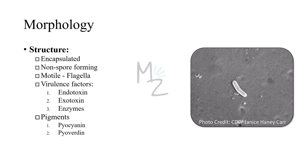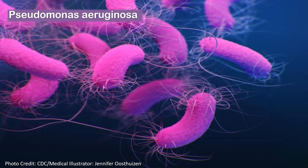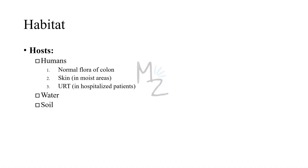We'll be talking about these virulence factors and pigments in detail in the pathogenesis section. Pseudomonas aeruginosa appears pink-colored under the microscope because it's gram-negative, and it is motile because it has flagella.